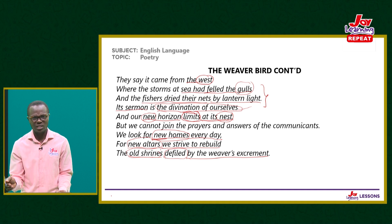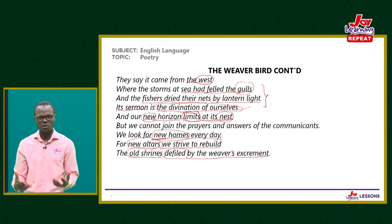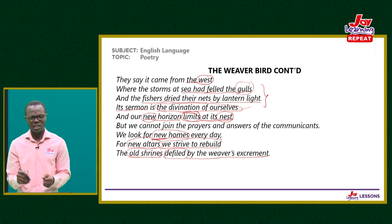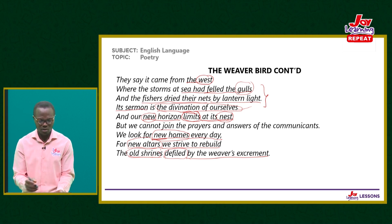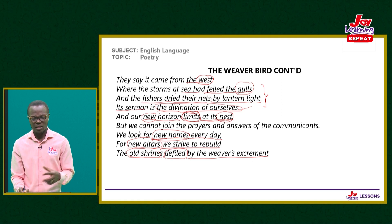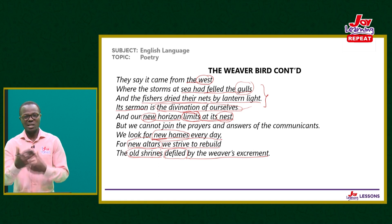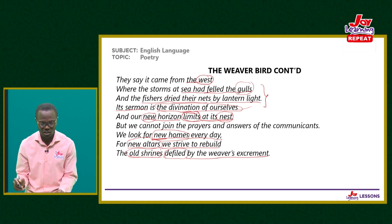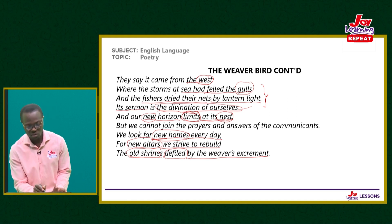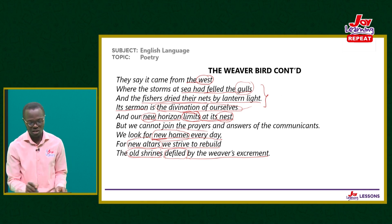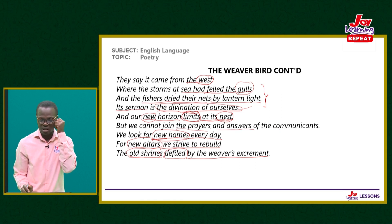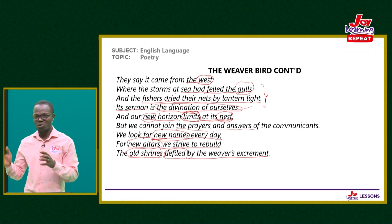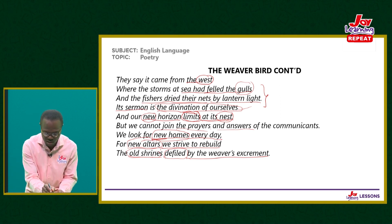The persona sees the weaver bird as a deceiver, a destroyer — because of how Africans have been displaced and dispossessed. In the poem, 'our new horizon limits at its nest' — the nest represents the colonial administration. Their institutions are the farthest we can see; we've forgotten what we had. The activities of the weaver bird took place in the guise of religion — 'preaching salvation to us that owned the house.' They came under the cover of religion.